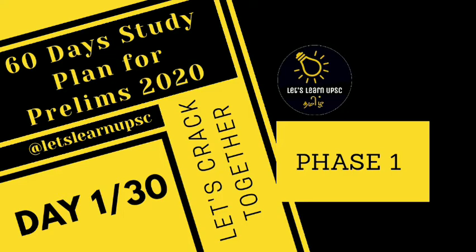In DPSP, there are three principles. So there are three principles in DPSP and the corresponding article numbers are useful to know.